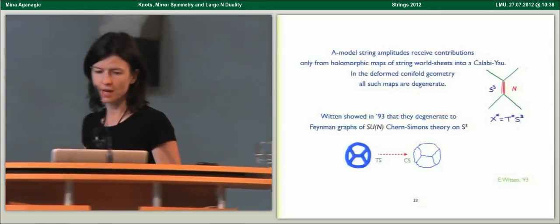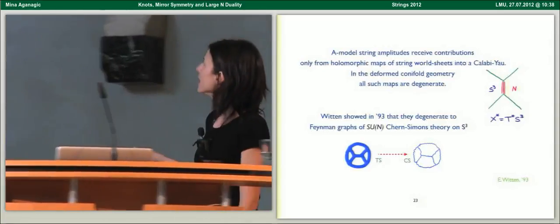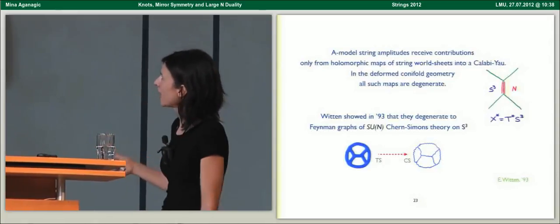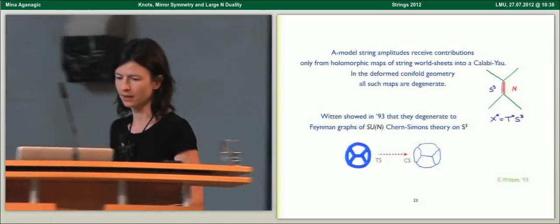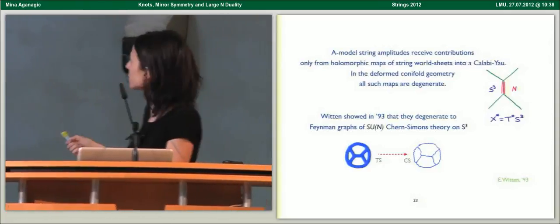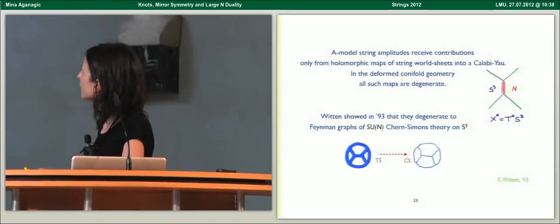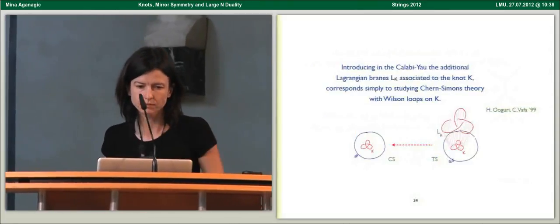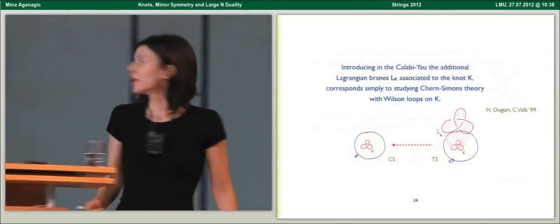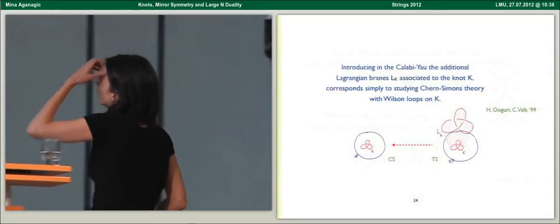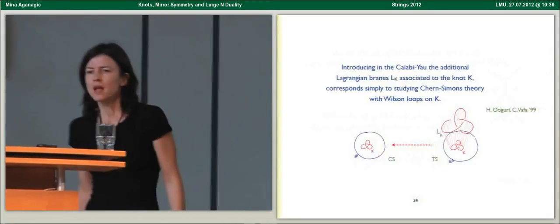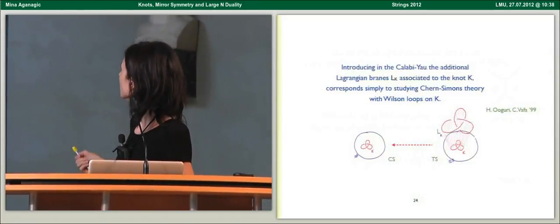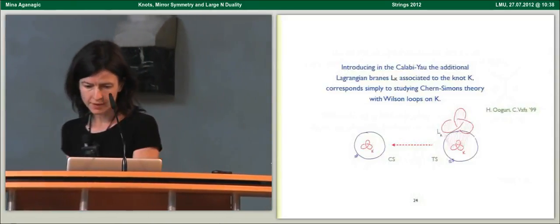If you have N D-branes in the full string theory on S3, you get SU(N) Chern-Simons theory on S3. The string coupling on the topological string side is the same as the effective Chern-Simons coupling after the transition. These two theories are really the same. The string field theory is ordinary Chern-Simons theory.